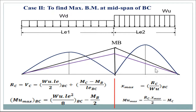This is WL²/8 for AB, WL²/8 for BC, and this is MB. After redistribution — say 30% is permitted in the limit state method — MB is 100% and 30% of this means it becomes 70%. So we get the net positive bending moment in span AB from this point to this point, and the maximum moment in span BC from that point to that point. From Case 2 we get the maximum design moment in span BC, and from Case 1 we get the maximum design moment in span AB.